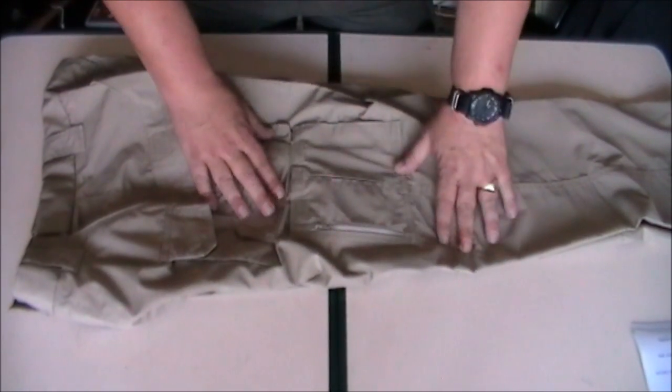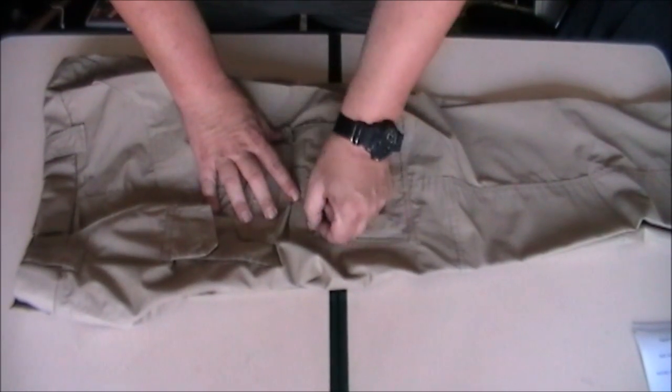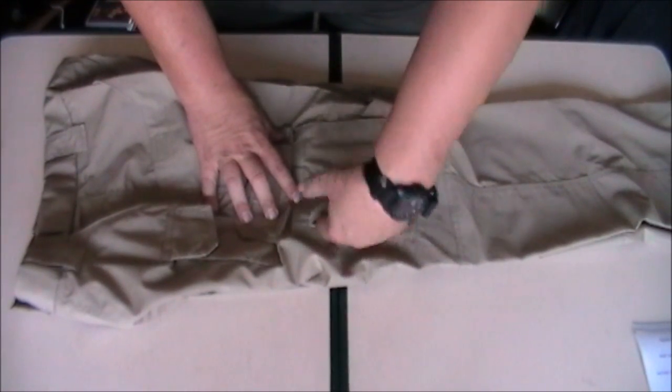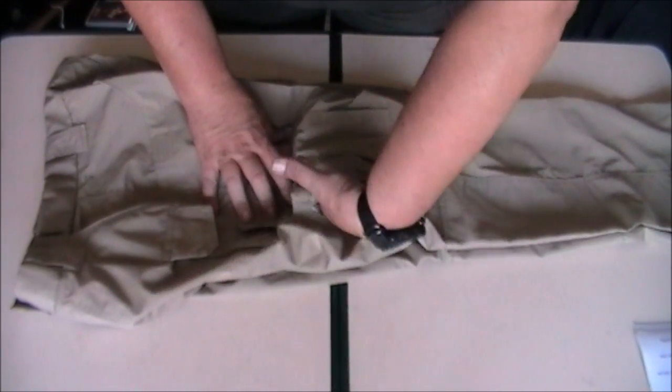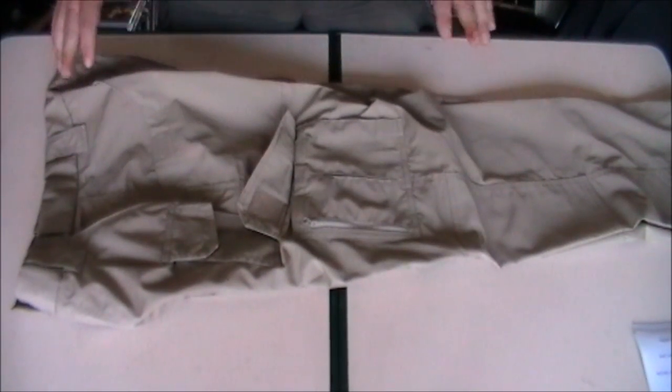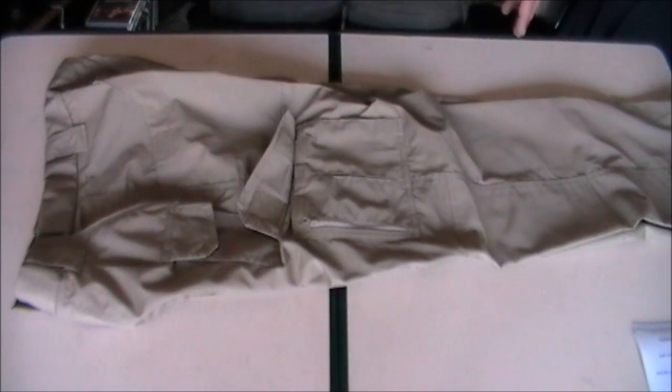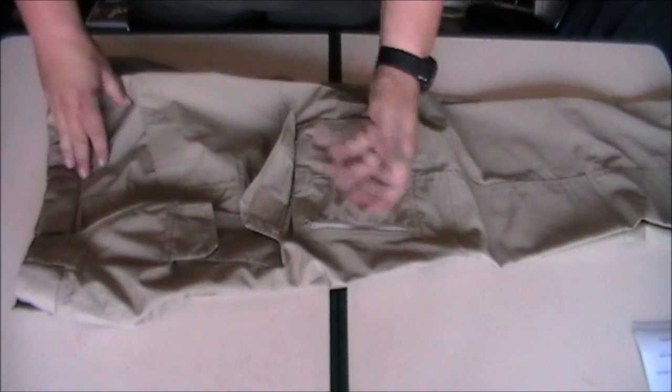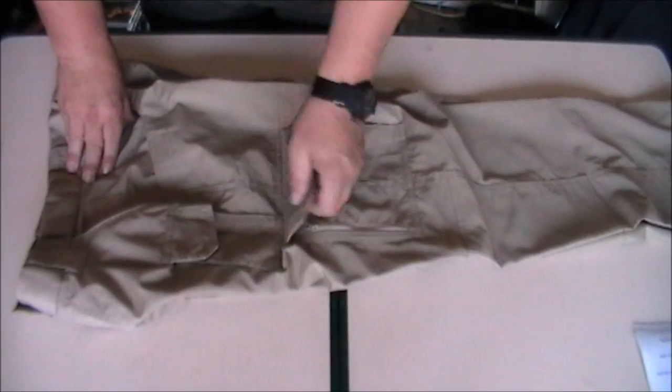The other thing that I love with these trousers are these zip pockets. They're vertical zips, which gives you access into quite a large pocket there. But great if you're sitting in the vehicle. If you just imagine yourself sitting down there, you need to get access to them, you can unzip them, hand straight in, fantastic idea. No risk of things falling out either when you're in a seated position.